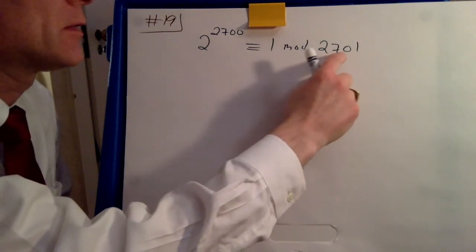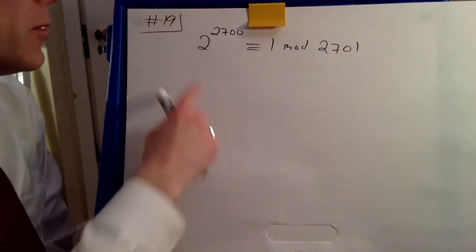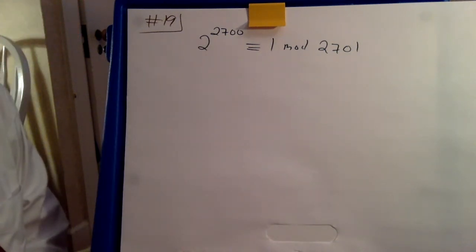We are given that 2,071 is a 2-pseudoprime, so we know this was true. But is it a strong pseudoprime?